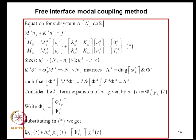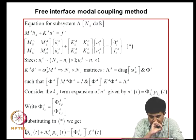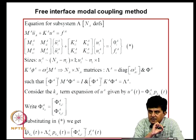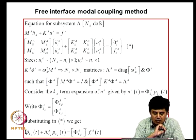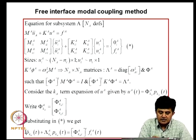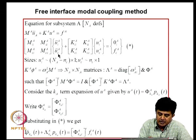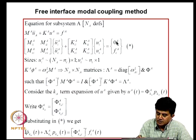We now move to the free interface modal coupling method. The objective is to produce a solution strategy that banks on the eigen solutions of substructures to construct the coupling matrices and the model for the coupled system. For subsystem A, we write the equation and partition degrees of freedom into interior and coupling, inducing partitioning of structural matrices and the forcing vector.